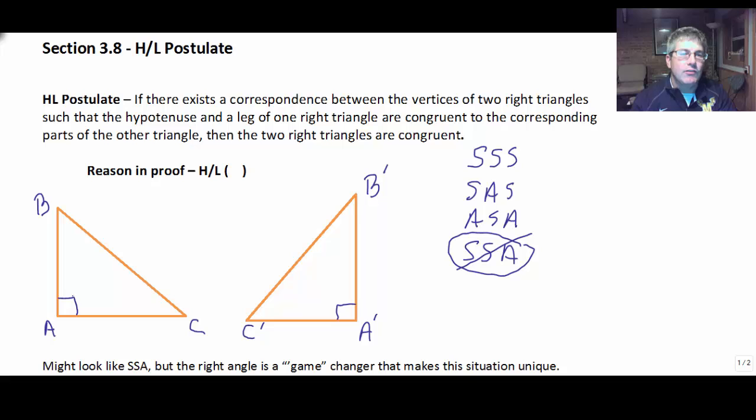So, let's say we have these two right triangles, triangle ABC and triangle A'B'C'. The HL postulate says, if there exists a correspondence between the vertices of two right triangles,